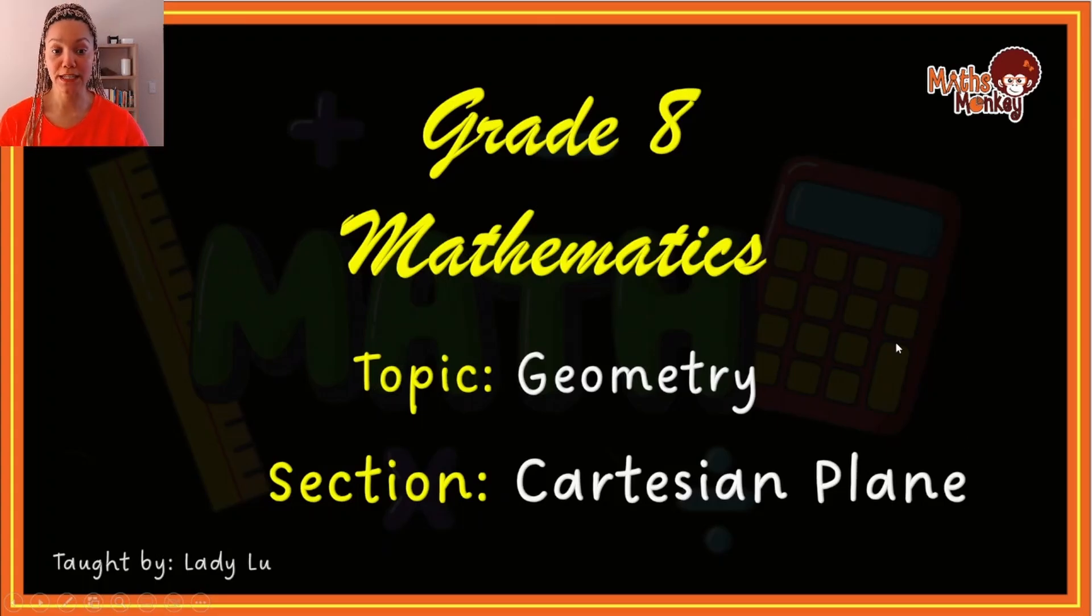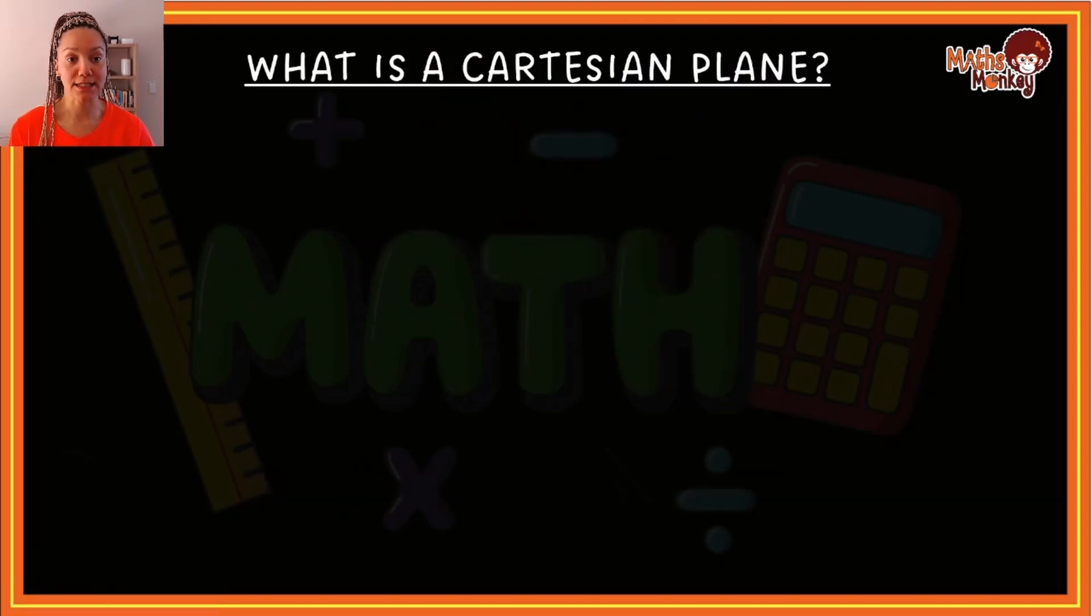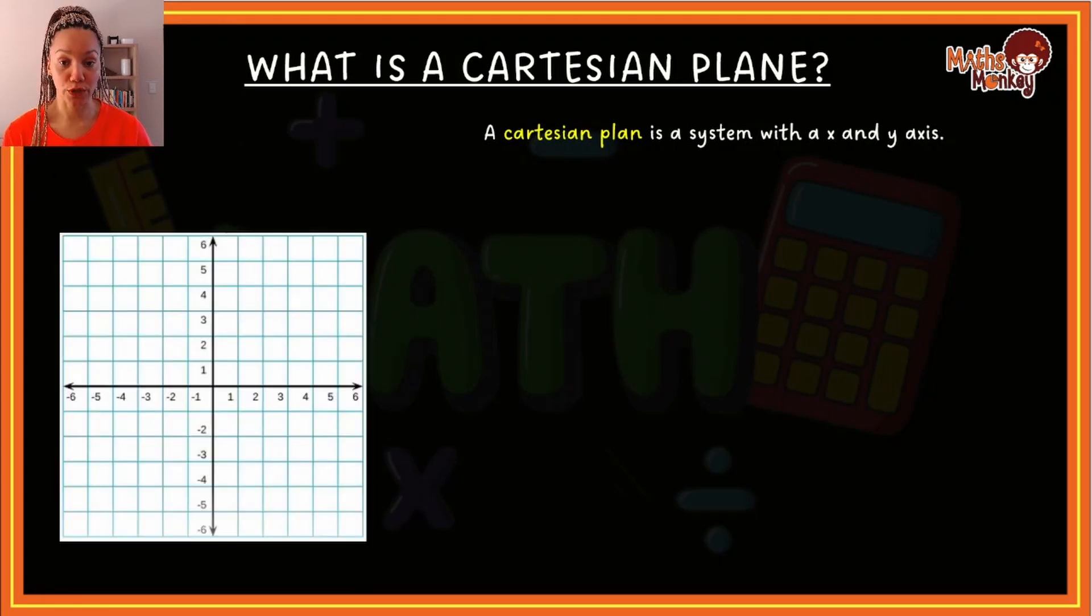Okay, so Cartesian plane geometry, let's start. What is a Cartesian plane? So a Cartesian plane is a system with an x and a y-axis. And this is what it would look like.